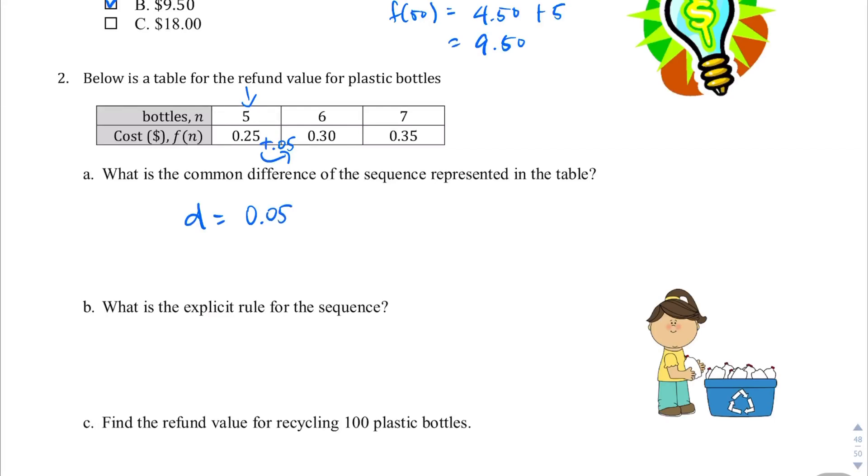Let's write the explicit rule. The explicit rule is f(n) is equal to the first term plus the common difference, which is 0.05. So the common difference is just the variable d, n minus 1. D times n minus 1. We don't know the first term. We know the fifth term. So let's go backwards. Again, make a table. Fourth term, third term, second term, first term. Fifth term is 25 cents. 5 cents less than that is 20. 5 cents less than that is 15 cents. 5 cents less than that is 10 cents. And the first term is going to be 0.05, so 5 cents.